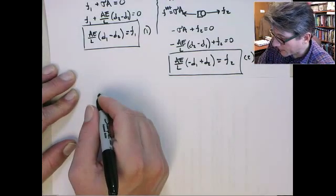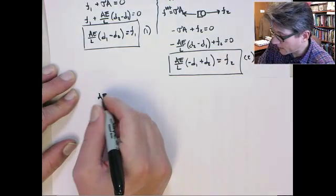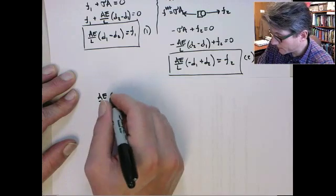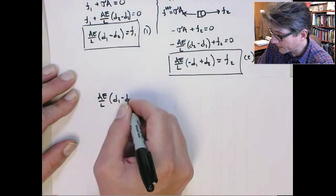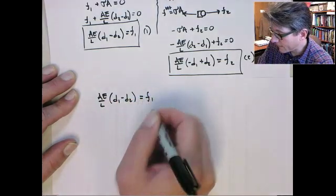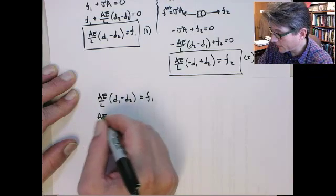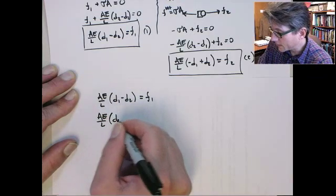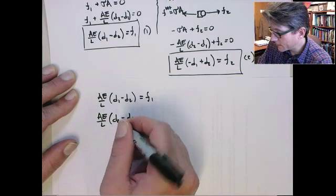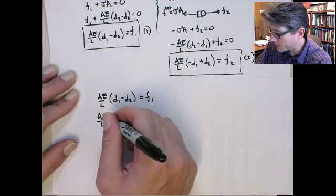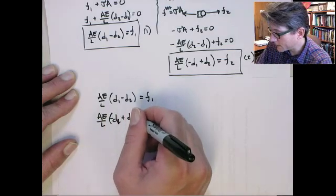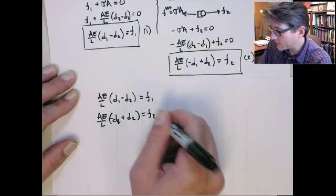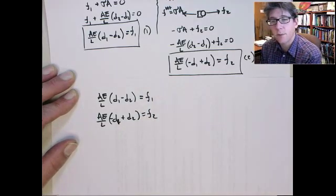We call this equation 1 and this equation 2. We'll write them right on top of each other. So I got AE on L, D1 minus D2 is equal to F1, and AE on L, D2, I'm sorry, let's do minus D1 plus D2 equals F2. So I keep it in a consistent order, and you'll see why in a second.